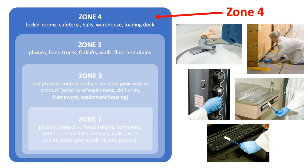Within the facility, you will need to further subdivide those individual areas into sampling zones. These are typically designated as sampling zones 1 through 4. Zone 4 includes the non-GMP areas or non-production areas of your facility, including the restrooms, halls, offices, warehouse, and loading dock.